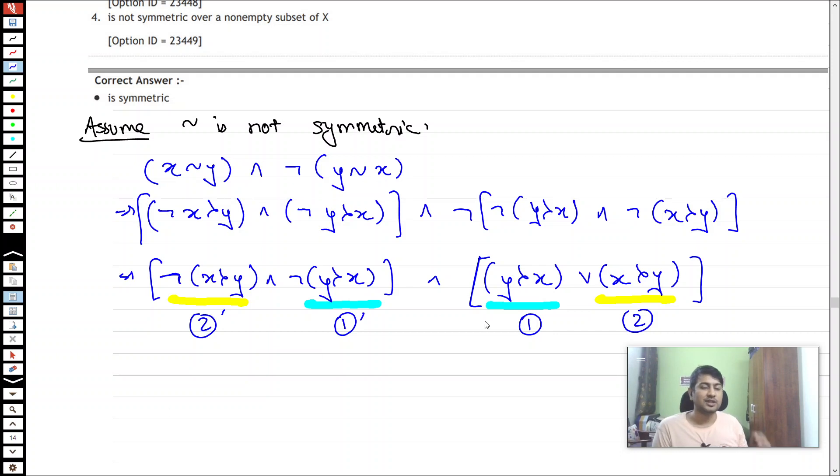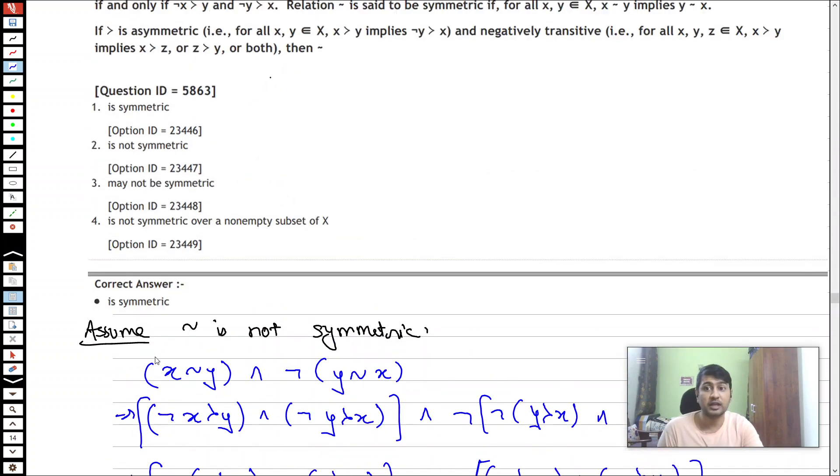So if one is true then we have this as false, and if two is true then this is false. So one and two, if any of them is false, the left hand side is rendered wrong. So we end up with a contradiction.